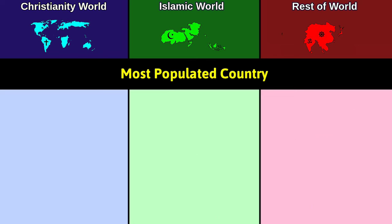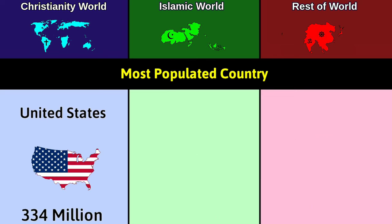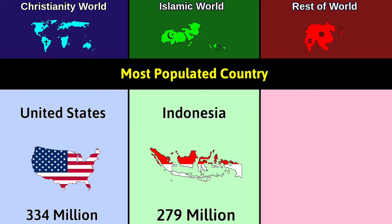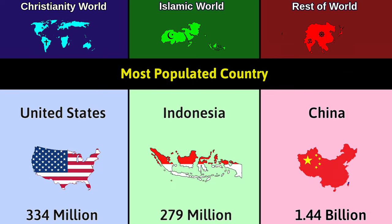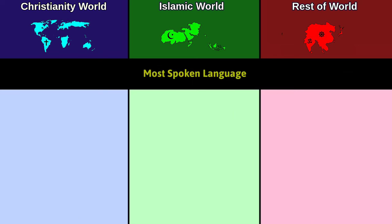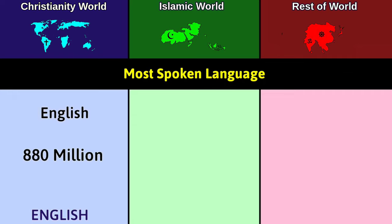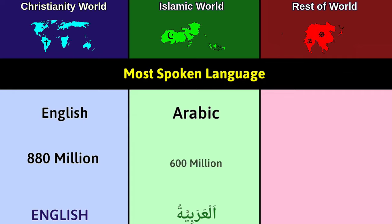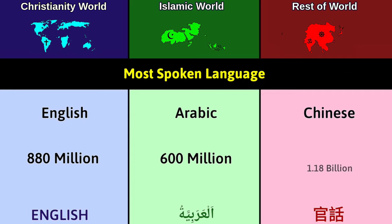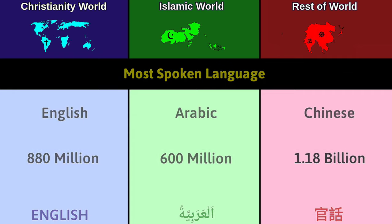Most populated country: Christianity — United States at 334 million; Islam — Indonesia at 279 million; Rest — China at 1.44 billion. Most spoken language: Christianity — English at 880 million speakers; Islam — Arabic at 600 million; Rest — Chinese at 1.18 billion.